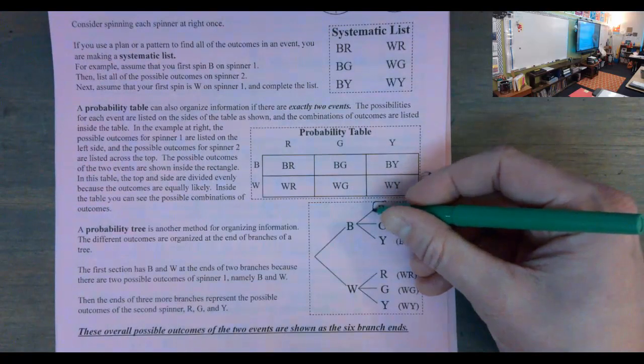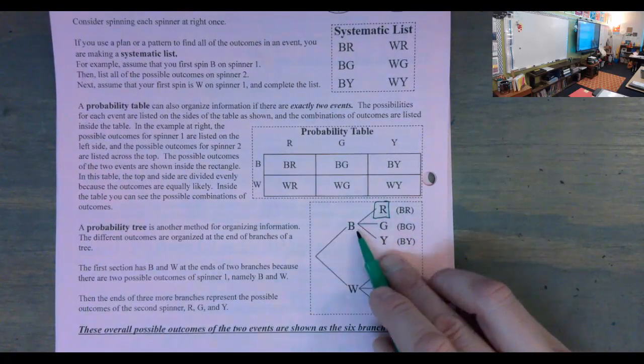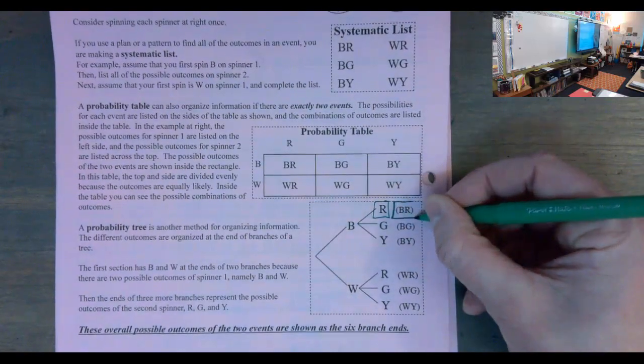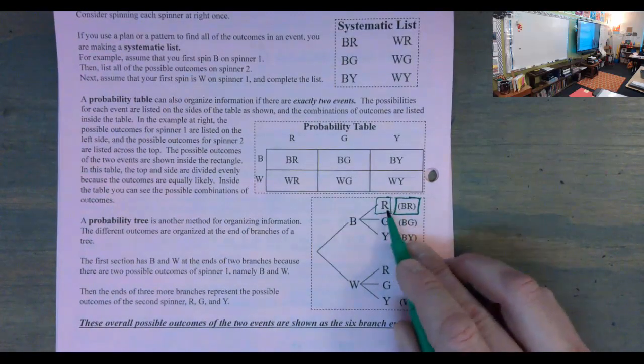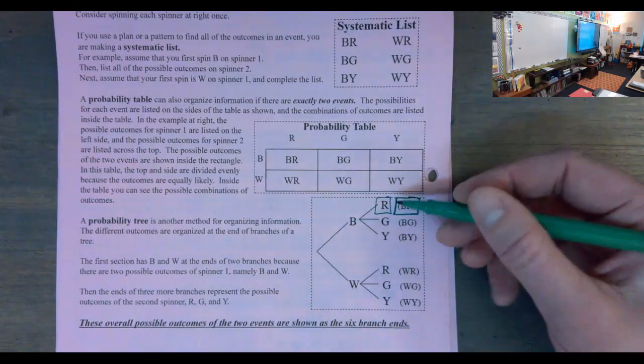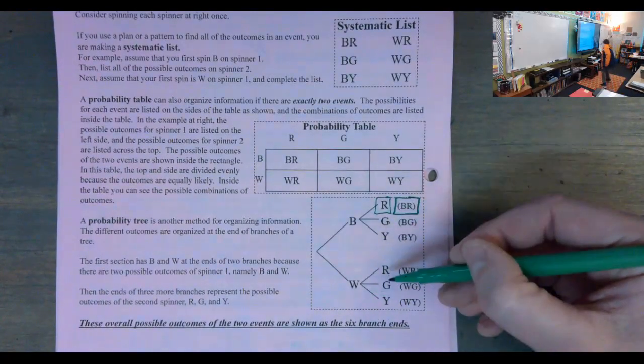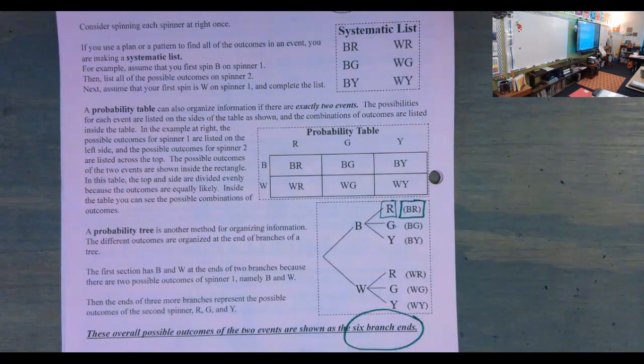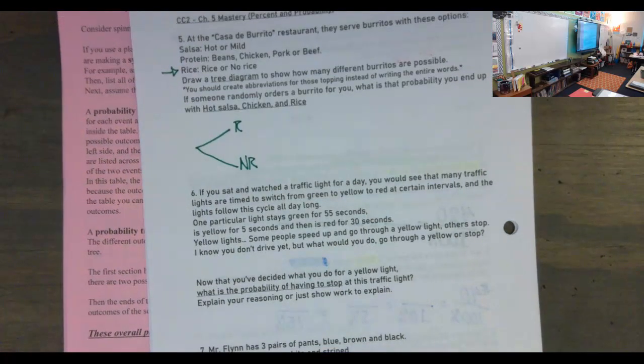But our amount of final options is only the amount at the end. Because guys, this right here, if you're looking in your math notes, this is not just red. That's red that came after black. So this is black red. That is the actual outcome, is black then red, not just red. So this includes this. This red includes this black. So here we only have six total options, not eight. There are six total options. And that's literally what I write right here.